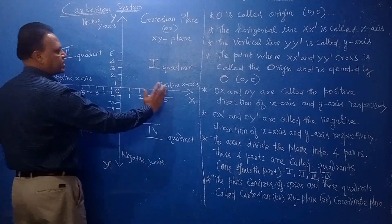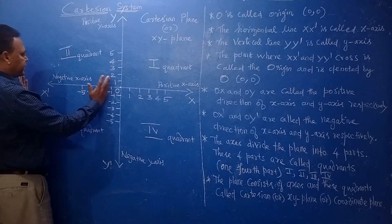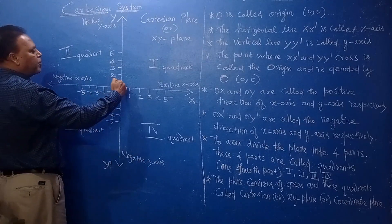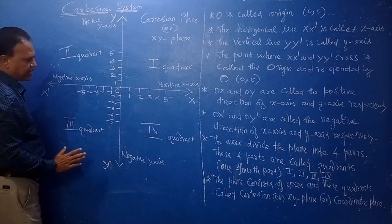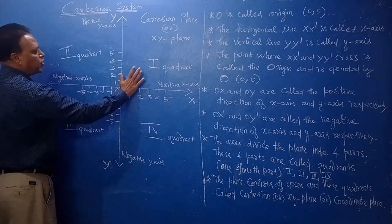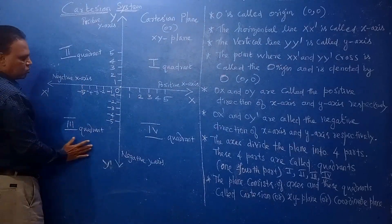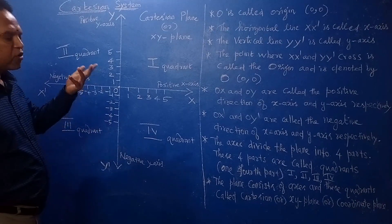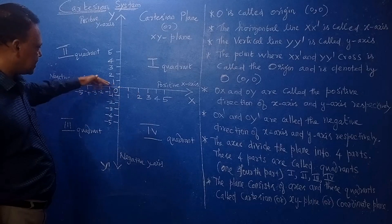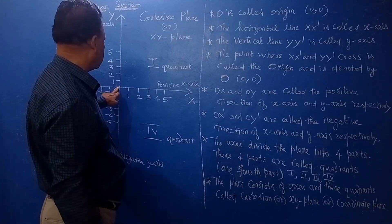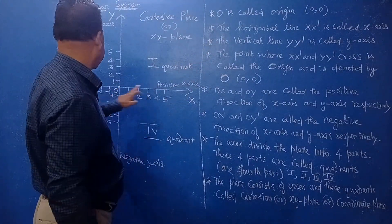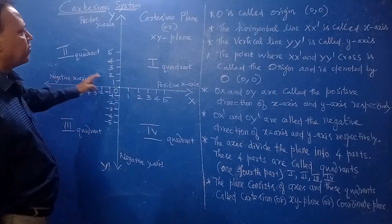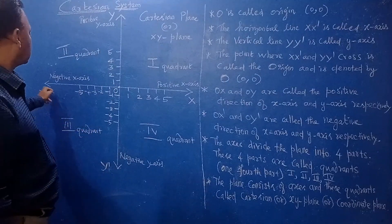On the X axis, the right side is positive and the left side is negative. Above the origin on the Y axis is positive, and below is negative. These two axes divide the plane into four quadrants. The point where XX-dash and YY-dash cross is called the origin, denoted by O, with coordinates (0, 0). The horizontal line XX-dash is the X axis and the vertical line YY-dash is the Y axis.